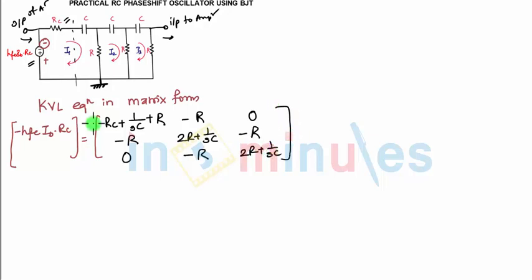Minus R, and total resistance is 2R plus 1/(sC) in the third loop. This we are multiplying with current: i1, i2, i3. Voltage is resistance multiplied by current. This is how the matrix form is written.